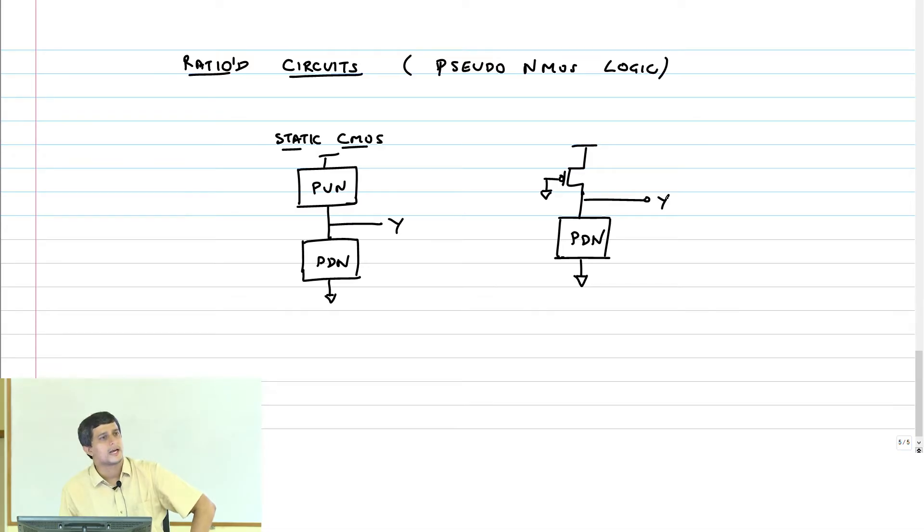The advantage in static CMOS logic was that there was no path for current to flow from supply to ground in the steady state. Of course, what we are doing here now is we are connecting that PMOS transistor to ground with a gate connected to ground always. So when the pull down network is active, obviously there is going to be current that will flow from supply to ground in steady state. So this is not a good thing. We will see how to avoid this problem, but first let us see what advantage we get in terms of the logical effort.